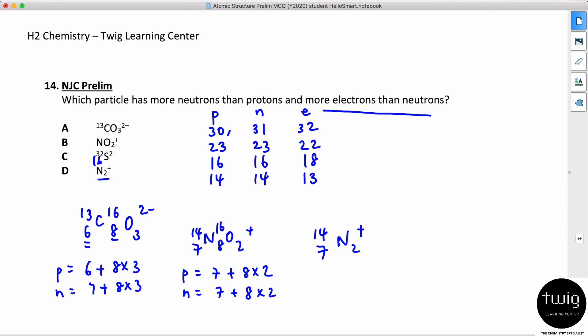So which particle has more neutrons than protons? I will eliminate this, this is okay, this is also eliminated. Oh, so actually it's actually A already - more neutrons than protons, can see that. So that's how we do it. Let's make sure it's correct - more electrons than neutrons: 32 electrons, 31 neutrons, so it's correct.